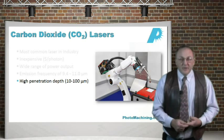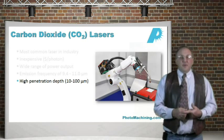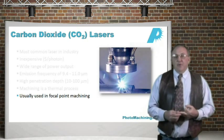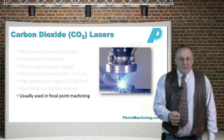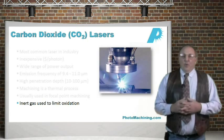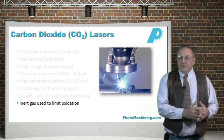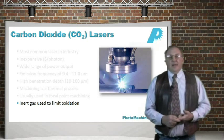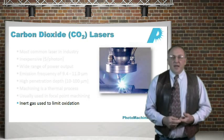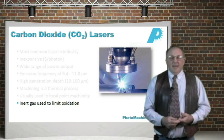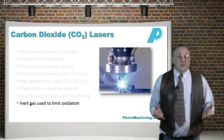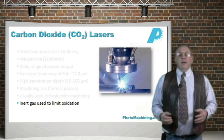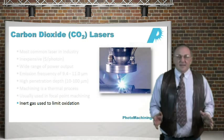CO2 lasers get fairly high penetration depth — tens to even hundreds of microns per pulse. Machining is a thermal process. Most of these lasers are used in focal-point machining with a Gaussian beam focused down to a spot, with the exception of CO2 TEA lasers, which have longitudinal electrodes and are used in an imaging mode. Because these are infrared lasers, inert gas is sometimes used to limit oxidation in the process area, and sometimes oxygen is used to enhance oxidation. The real message is that many times these lasers use some kind of gas assist.